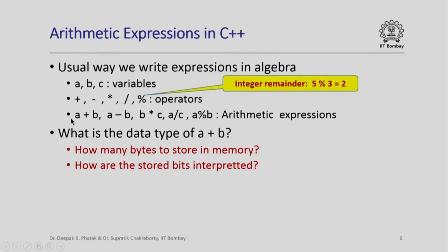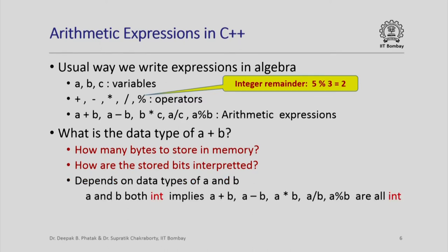What is the data type of A plus B? This is asking how many bytes should be allocated to store that value and how should the stored bits be interpreted. The data type of an arithmetic expression depends on the data types of the various operands. So in this case it depends on the types of A and B. If A and B are both integers, then A plus B, A minus B, A star B, A divided by B, and A percent B all have the data type int.